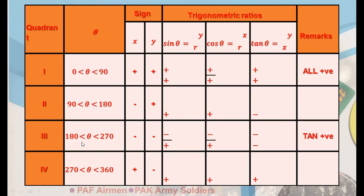In the third quadrant, theta is between 180 and 270 degrees. Both x and y are negative. Sine theta = y/r is negative. Cosine theta = x/r is also negative. But tangent theta = y/x — negative divided by negative — gives a positive result. So only tangent is positive in the third quadrant, and its reciprocal cotangent is also positive.